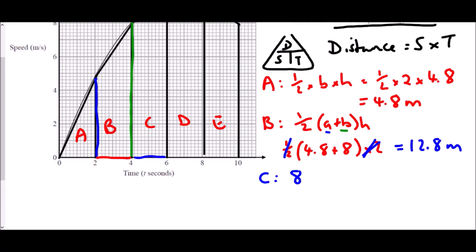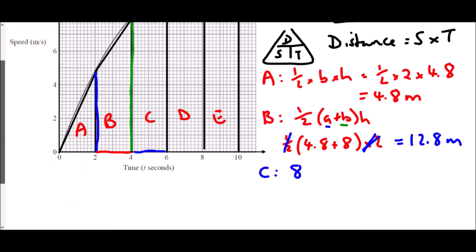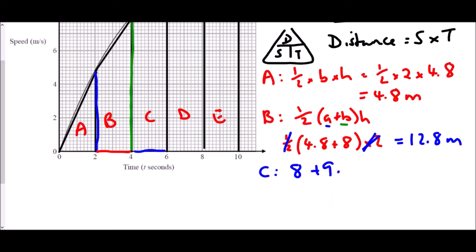So A is 8. And B, in this case, that is going to be at 9.6. So plus 9.6. And that one equals 17.6 metres.